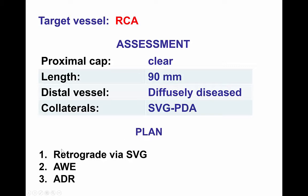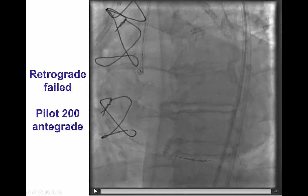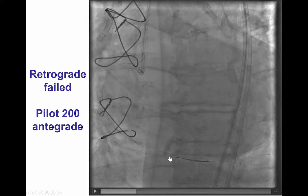Given the patent vein graft, our initial plan was to try retrograde, followed by antegrade wire escalation or dissection re-entry if the retrograde attempt failed. However, despite multiple attempts, we were unable to advance the retrograde guide wire proximal to the distal anastomosis because of a very tight acute angle. This is a common problem in vein graft anastomosis.